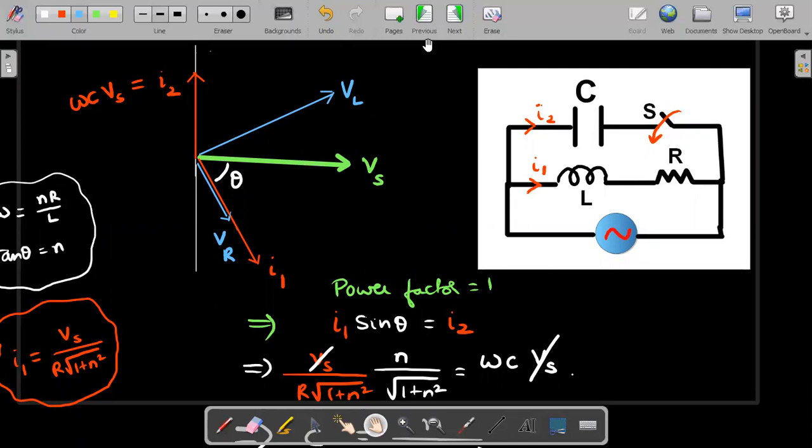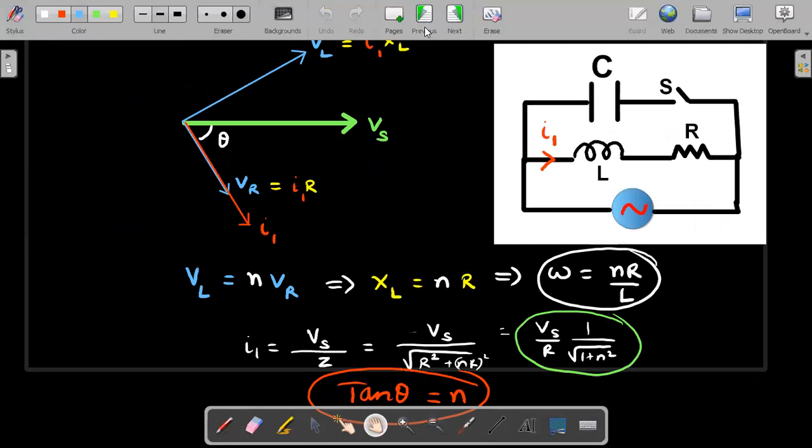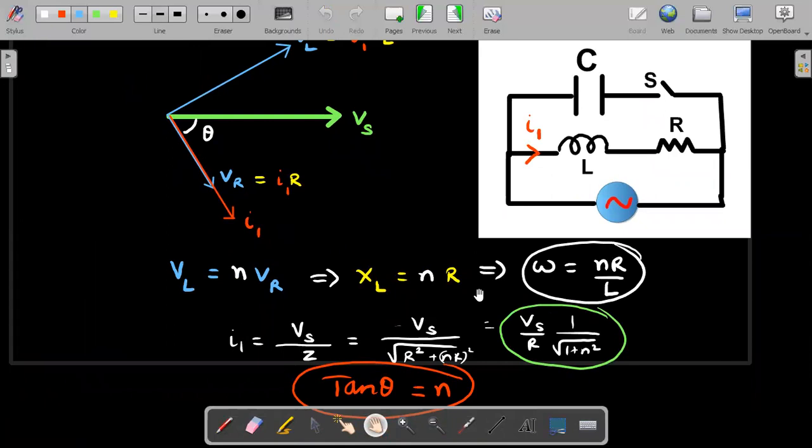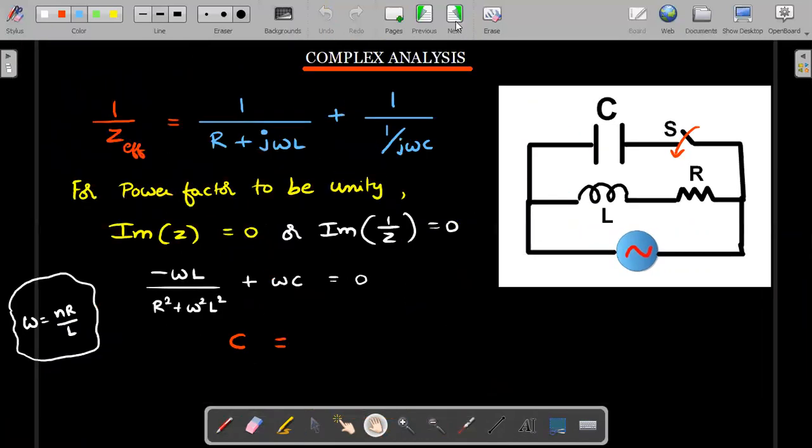Now let's look at the complex analysis. This first page that I have already done before the switch is open, this analysis is very important. So once the switch is closed, students who have already learned the complex analysis will realize that this C's reactance would be in parallel with the impedance of this particular branch. One by Z effective for parallel branching is equal to one by Z1 plus one by Z2, where Z1 which is the series of R and L is R plus J Omega L, and this C is one by J Omega C.